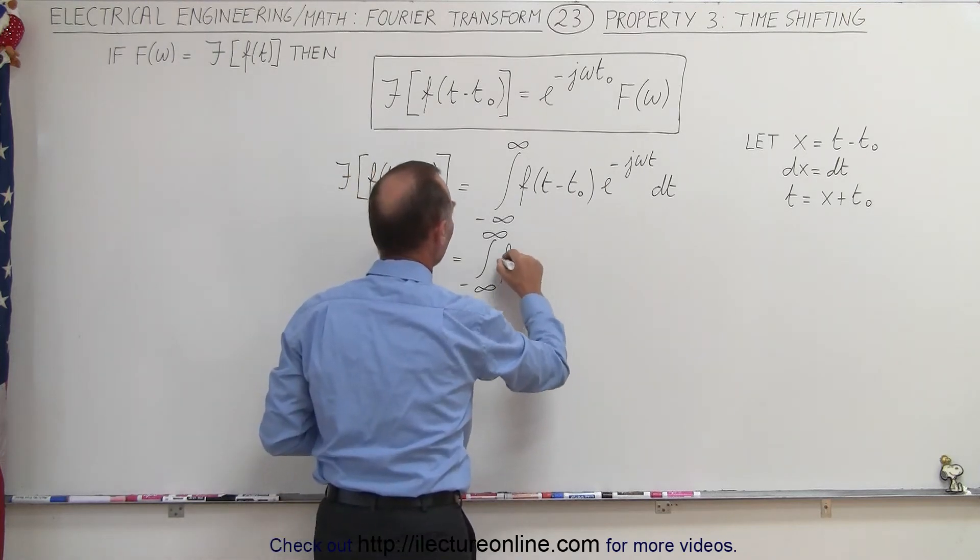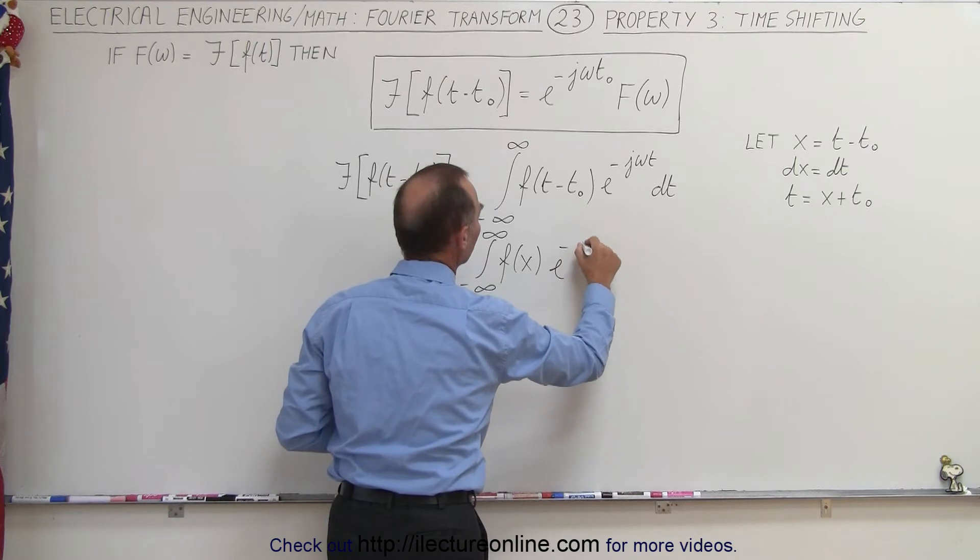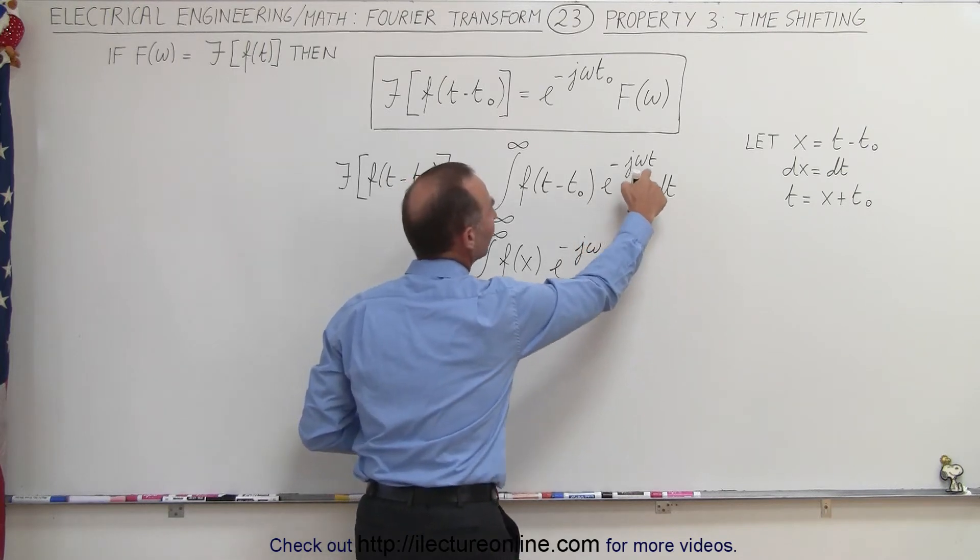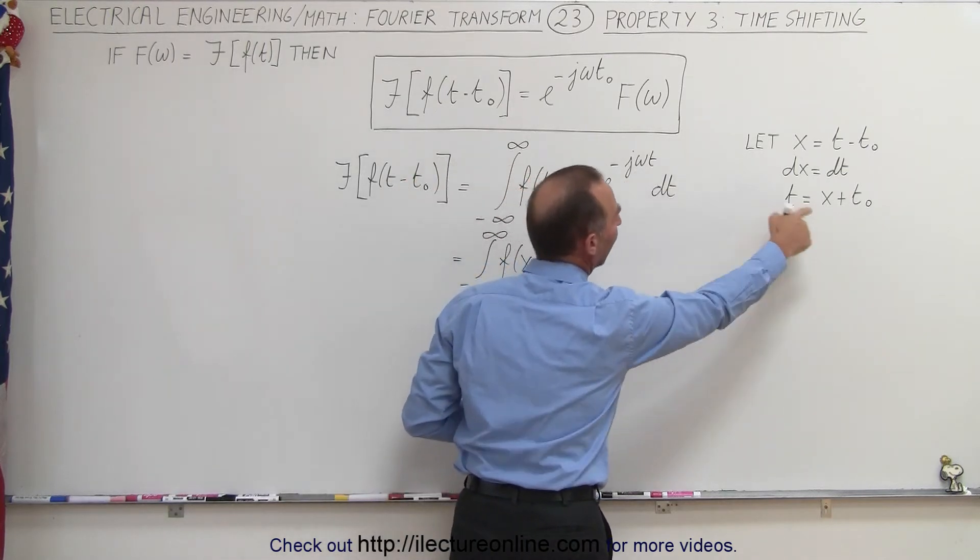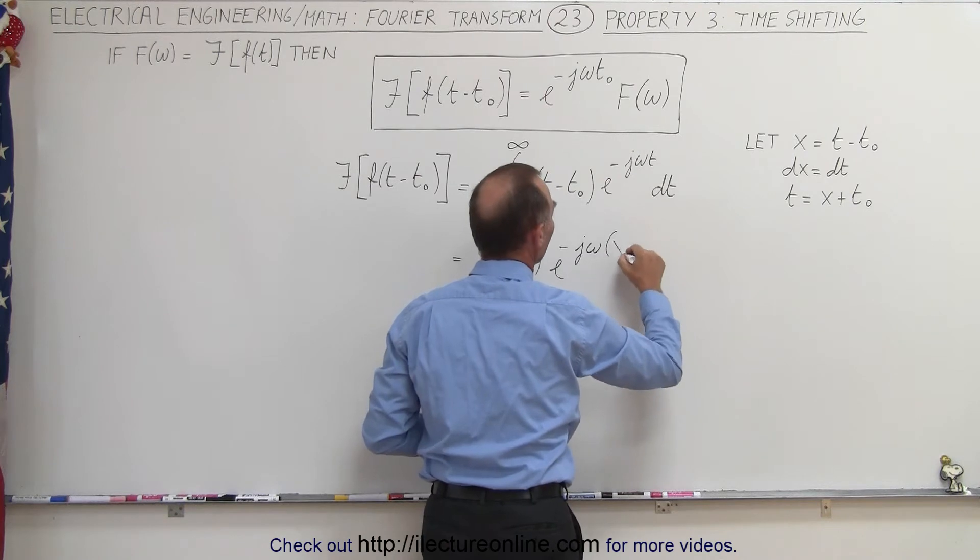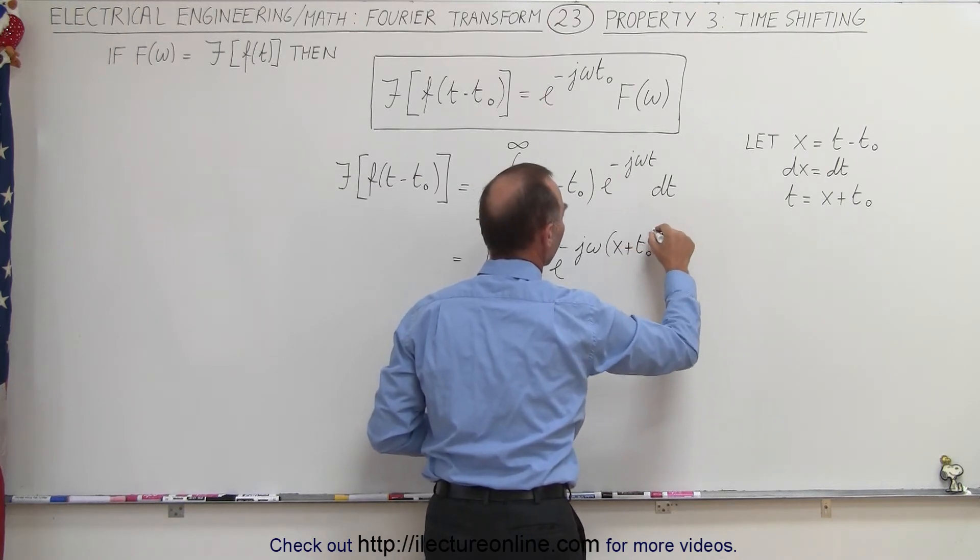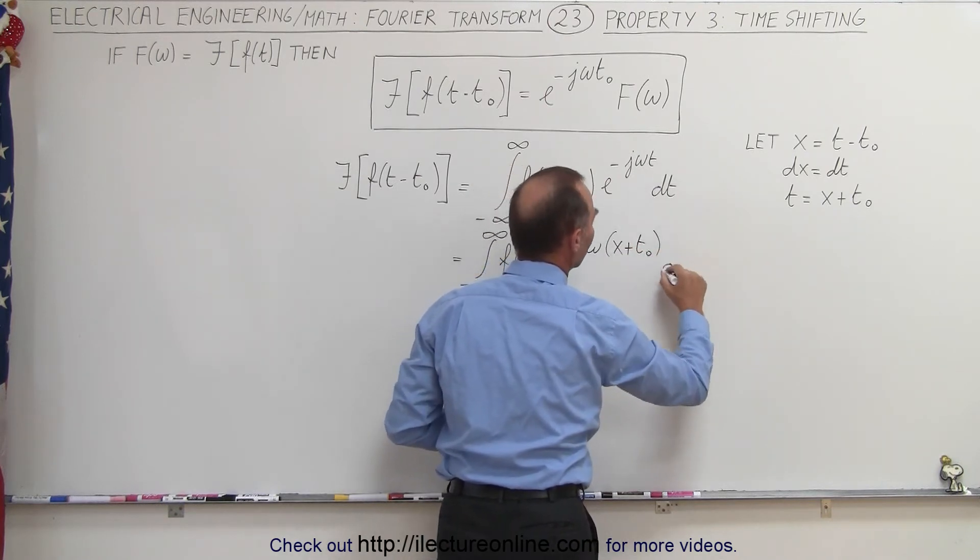And so now we have f of x, and then we have e to the minus j omega, and instead of t, we're now going to write x plus t sub-naught. And then dt becomes dx.